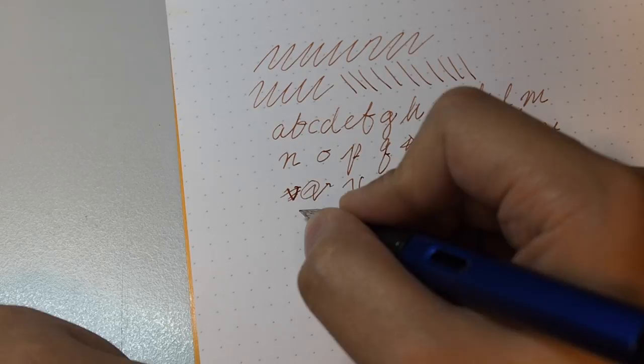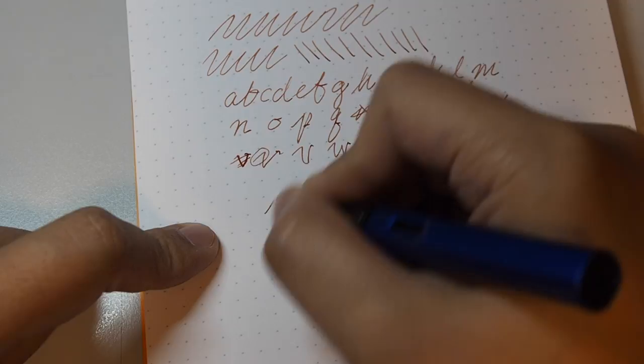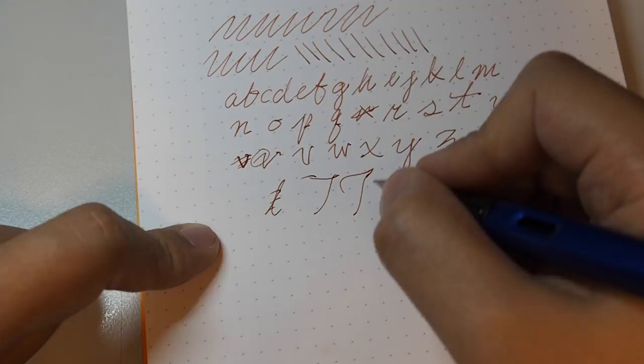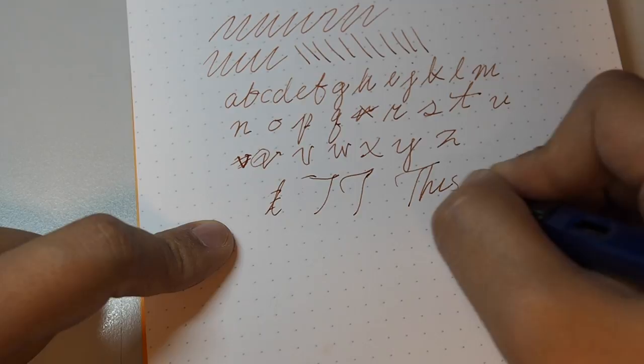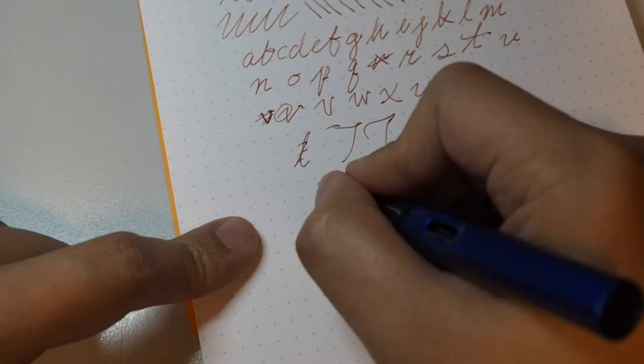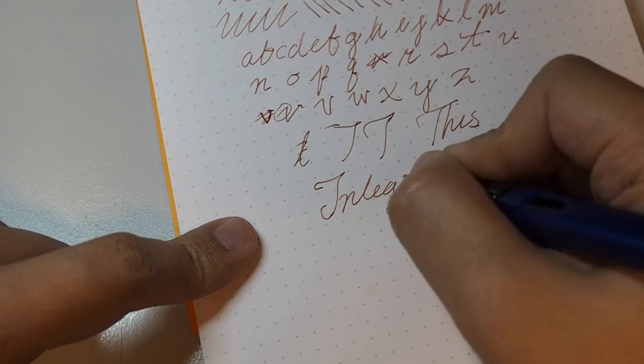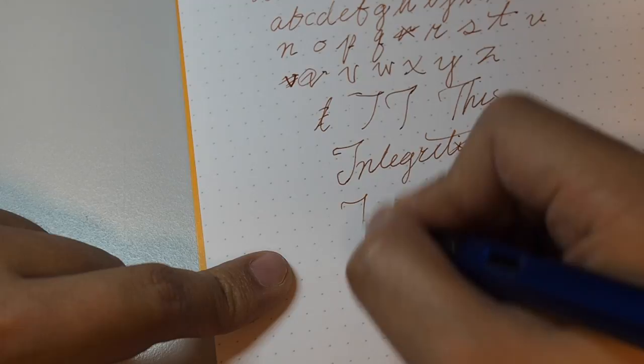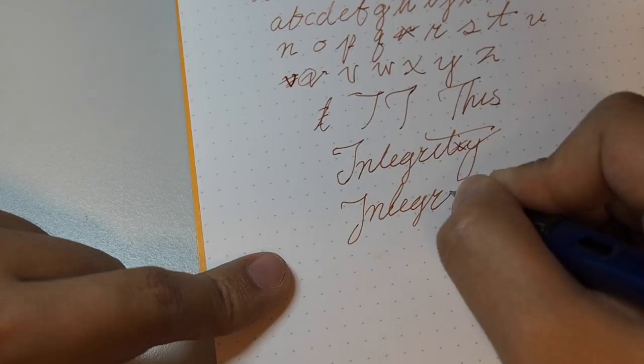Now I'm going to write my favorite word. There's a little bit of skipping and this annoys me quite a bit. Integrity. Oops, all right let's do that one more time. There you go, integrity.